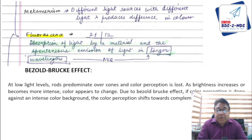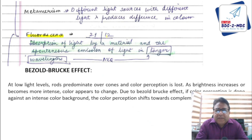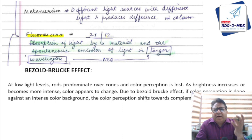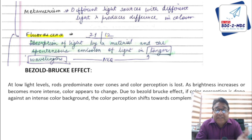Fluorescence is a natural phenomenon of teeth. The classic exam question: a patient has ceramic crowns on upper central and lateral incisors and goes to a discotheque. The crowns look missing — the teeth appear absent. The missing property is fluorescence.